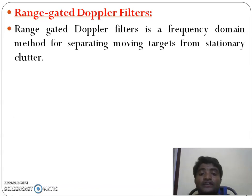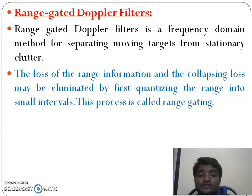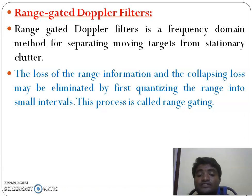The range gated doppler filter is a frequency domain method for separating moving targets from stationary targets. The loss of range information and collapsing loss is eliminated by first quantizing the range into small intervals. This process is called range gating.